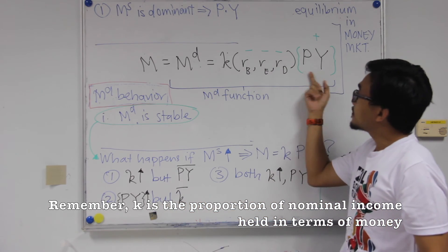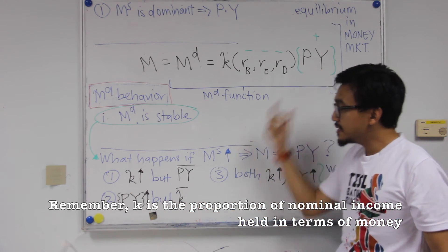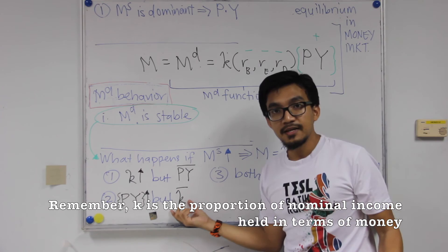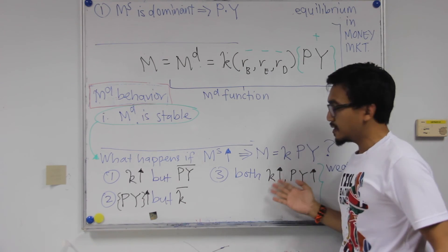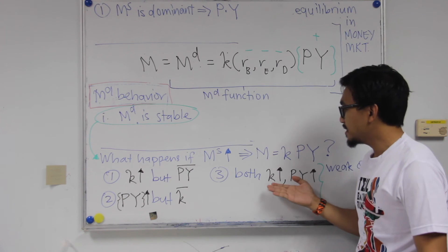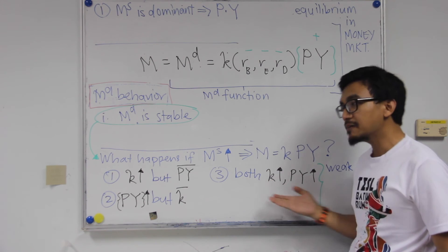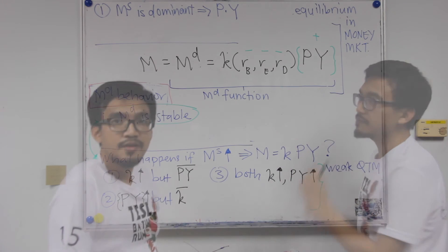Second situation, it might be that the nominal income increases, but K remains the same. K remains constant. While in the third situation, it might be that both of them go up together, maybe 50-50. 50% K goes up and 50%, another half goes to nominal income, or 30-70, but whatever it is, both of them go up.